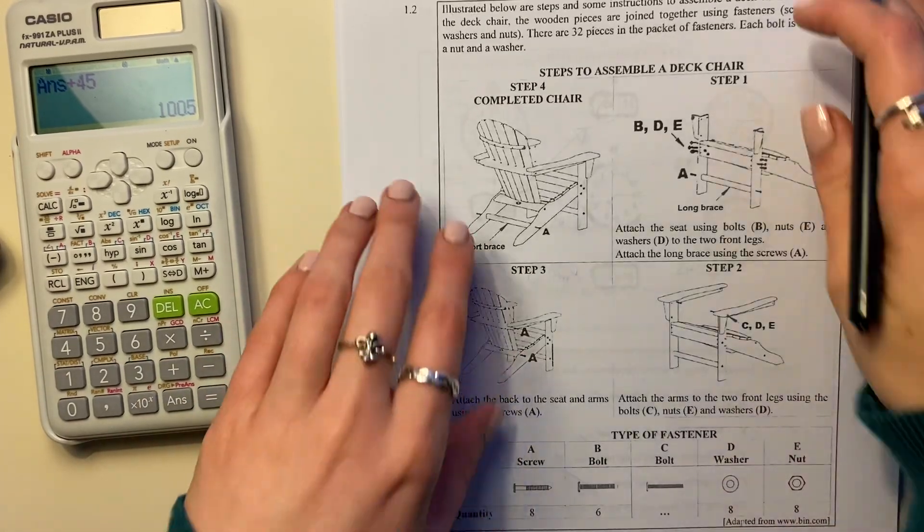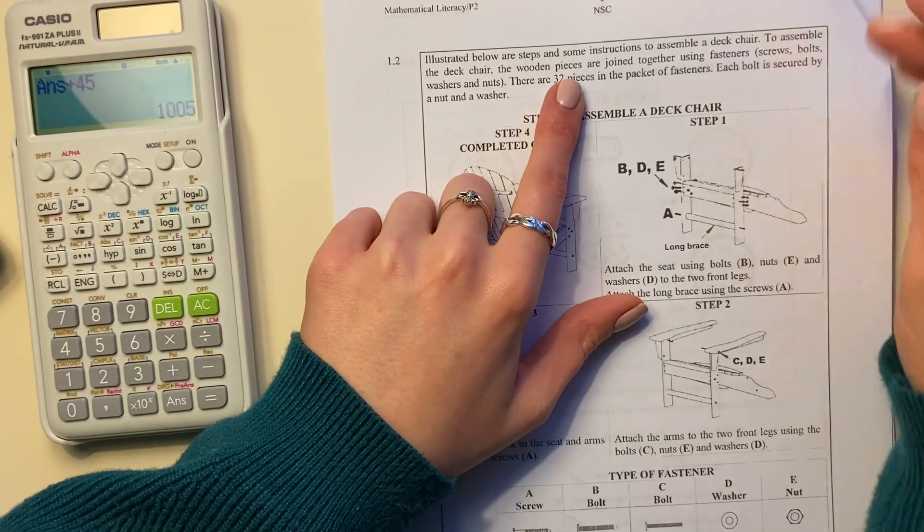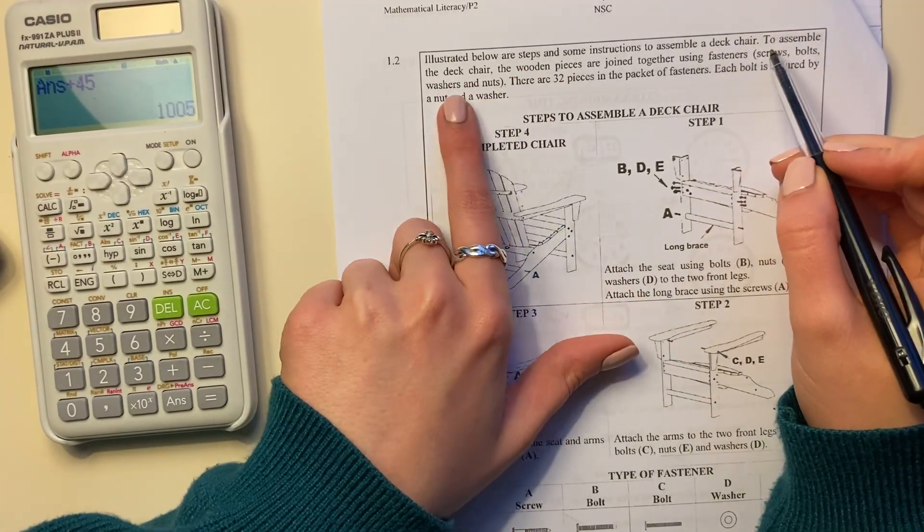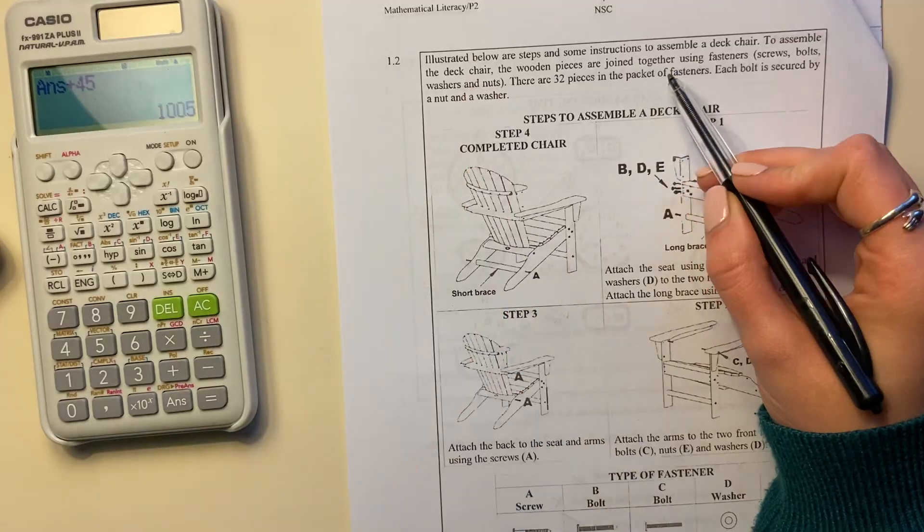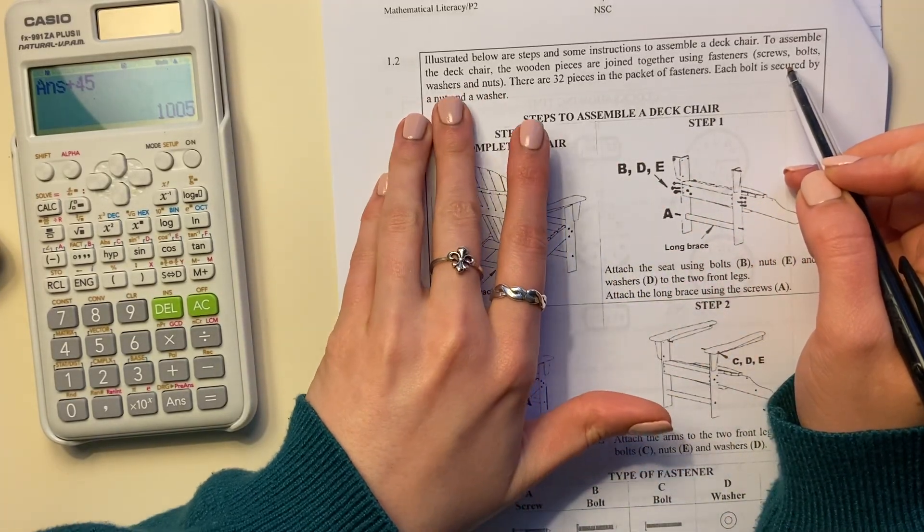Let's move on to 1.2. 1.2 says illustrated below are steps and some instructions to assemble a deck chair. To assemble the deck chair, the wooden pieces are joined together using fasteners which are screws, bolts, washers and nuts.